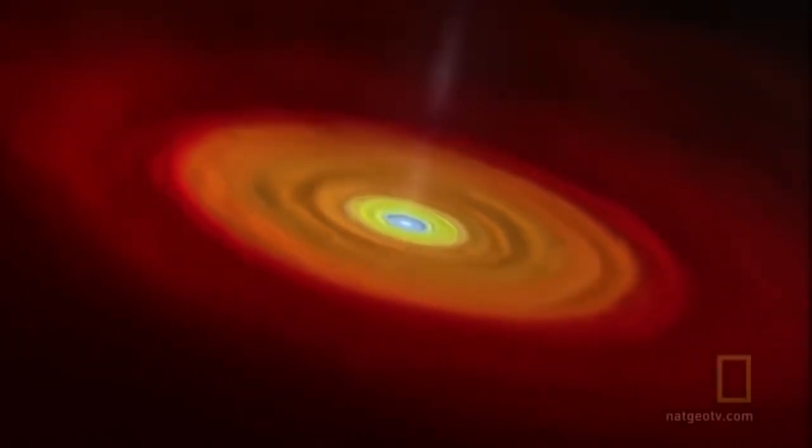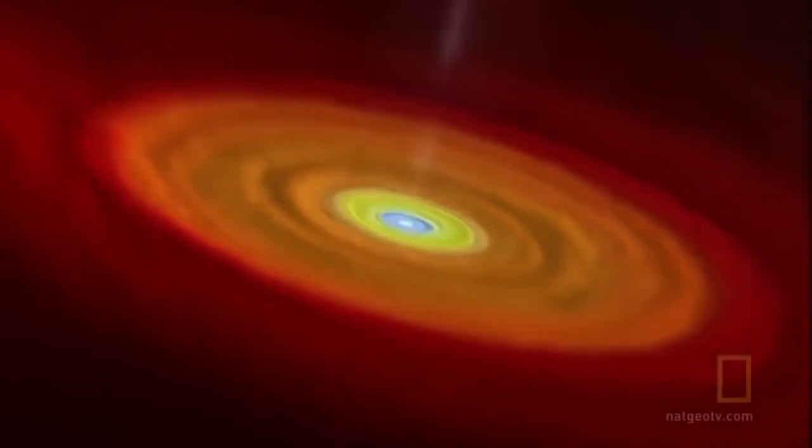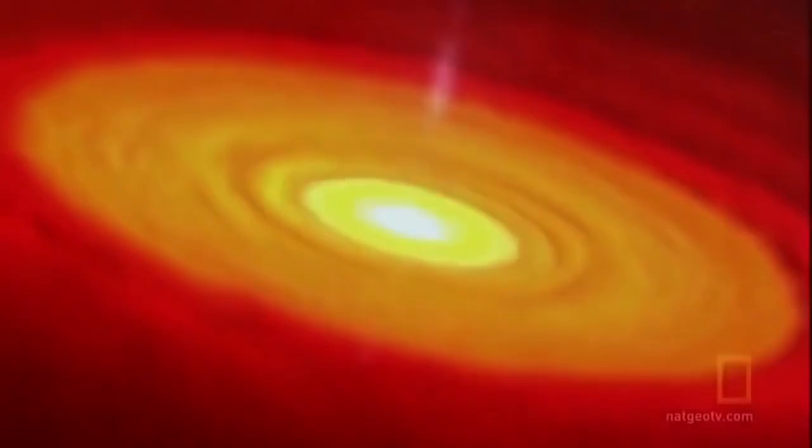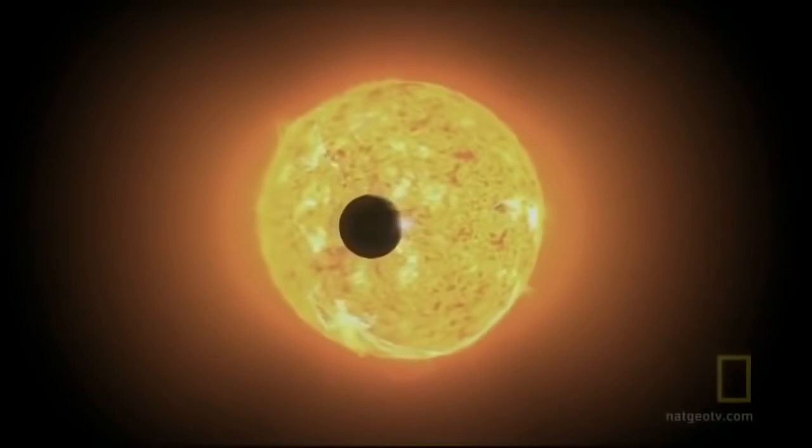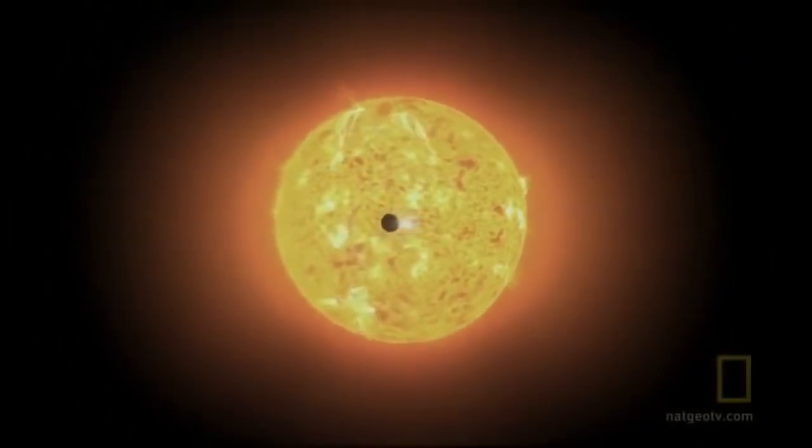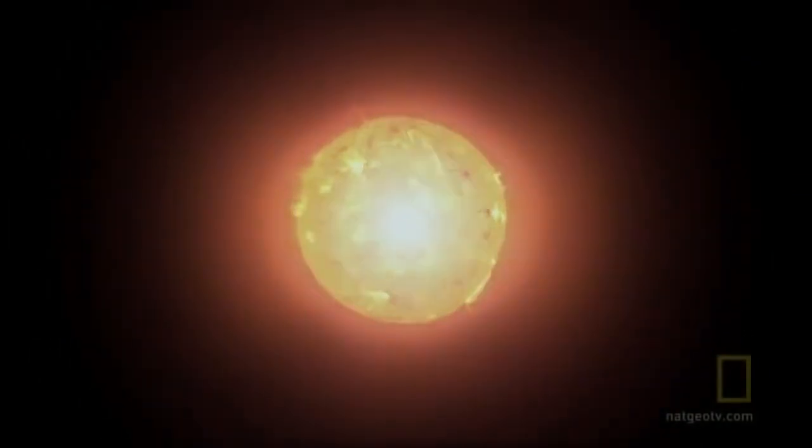Black holes offer scientists an analogy to how the big crunch theory works. When certain stars run out of fuel, they collapse in on themselves into a smaller and far denser mass that attracts more and more matter, just like the big crunch.